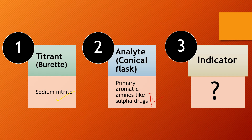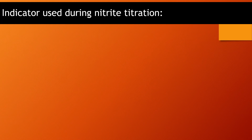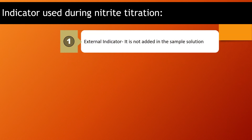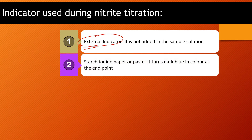What is the indicator used in this particular titration? The indicator used during nitrite titration is a special type called an external indicator. We call it an external indicator because, unlike other titrations, we are not adding this indicator into the sample solution — meaning in the conical flask we will not add this indicator. Instead, we are using starch iodide paper or starch iodide paste as the indicator, which we keep ready on a tile.